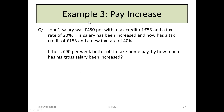We now look at Example 3. John's salary was €450 per week with a tax credit of €53 and a tax rate of 20%. His salary has been increased and he now has a tax credit of €153 and a new tax rate of 40%. If he is €90 per week better off, by how much has his gross salary been increased?